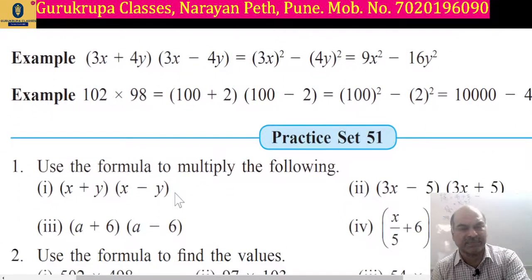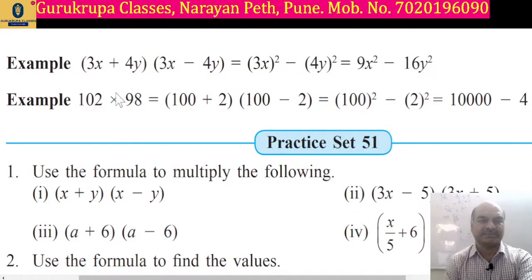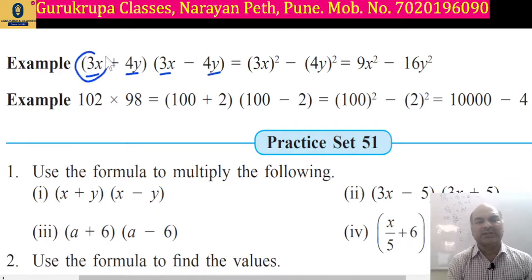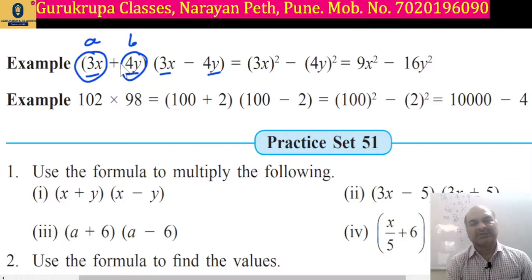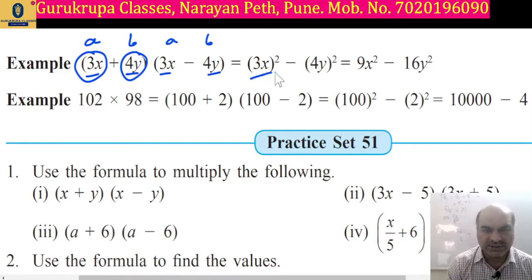One example is given to you here. Example: 3x plus 4y, multiplied by 3x minus 4y. Here 3x and 4y are treated as a and b. So a plus b into a minus b gives a square minus b square. Here that becomes 3x square minus 4y square.